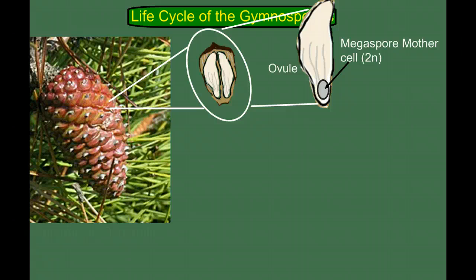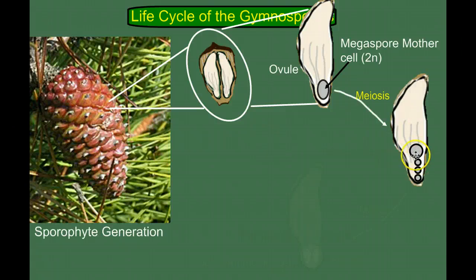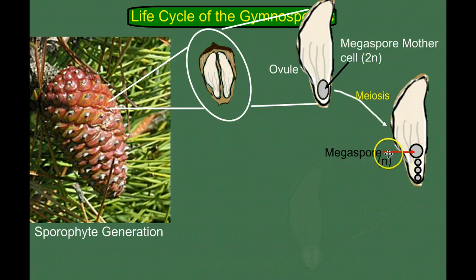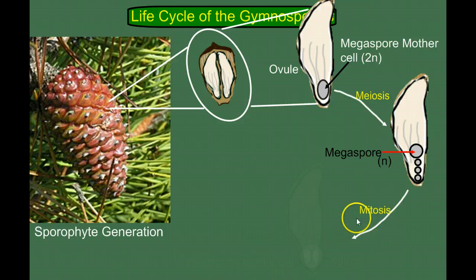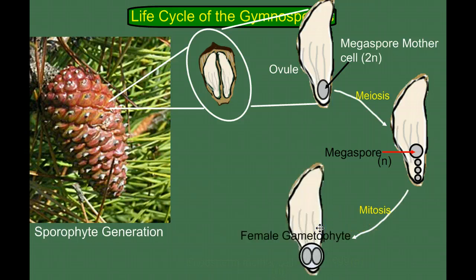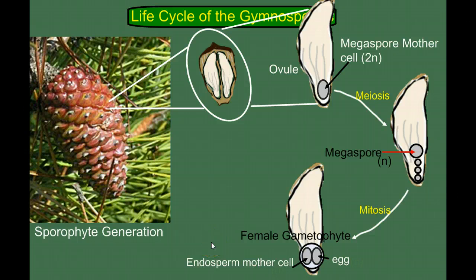So inside the ovule, the megaspore mother cell undergoes meiosis, making four haploid cells. Now, only one of these is going to become the megaspore — these other three kind of go away; they're not important. This megaspore is the haploid spore, and we know that spores become gametophytes, so it's going to grow by mitosis to become the female gametophyte. Inside this female gametophyte are a number of cells, one of which is the egg, because gametophytes make gametes. The other is the endosperm mother cell, which is going to give rise to the endosperm — the nutritive tissue that's going to sustain the embryo after fertilization.